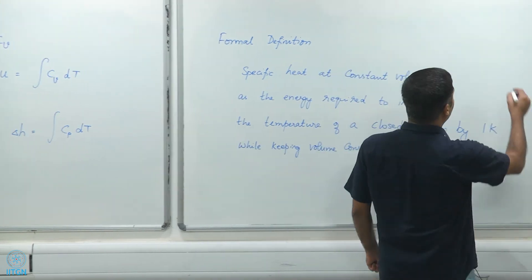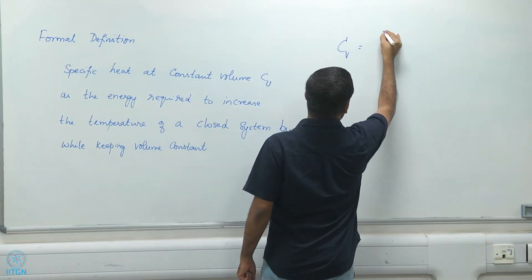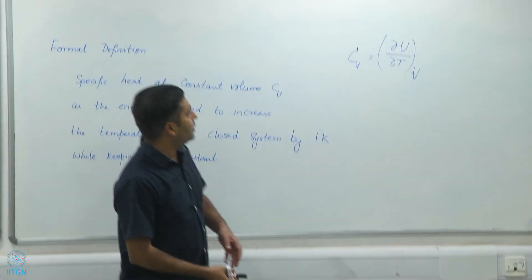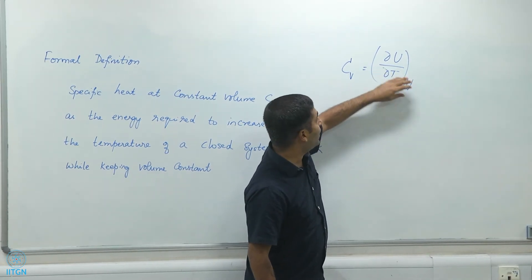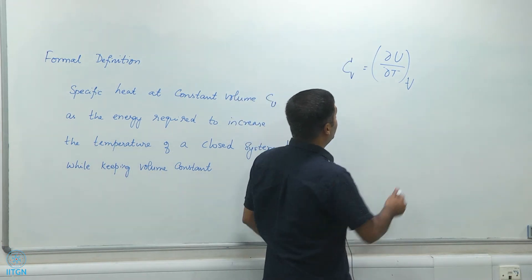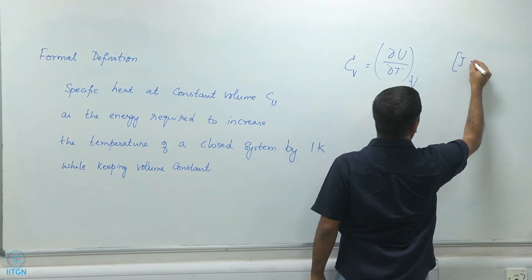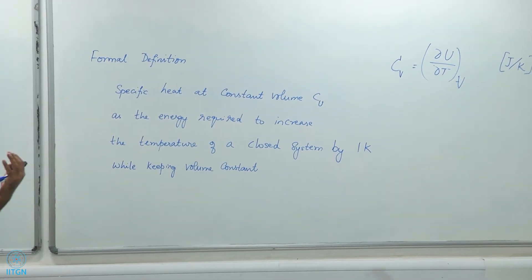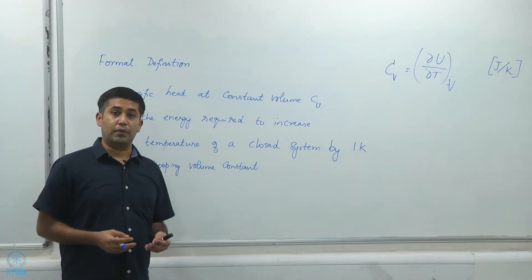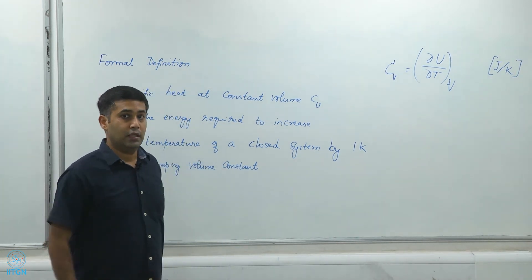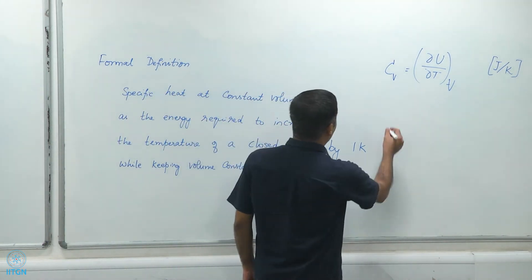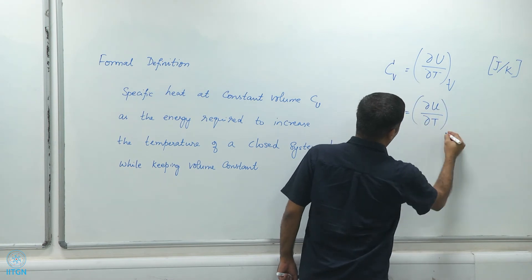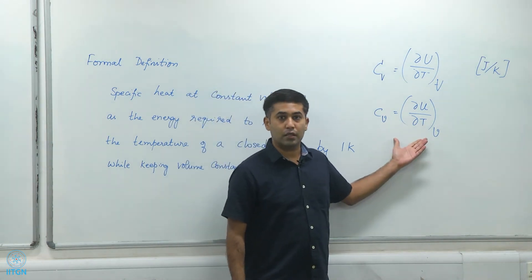There are two forms. Capital Cv is defined as the partial derivative of U with respect to T at constant V — that is the energy required to raise the temperature by 1 Kelvin at constant volume, and its units are joules per Kelvin. A more useful intensive property is the lowercase Cv, defined as the partial derivative of the specific internal energy with respect to T at constant specific volume. This intensive form is more commonly used as the definition of specific heat.